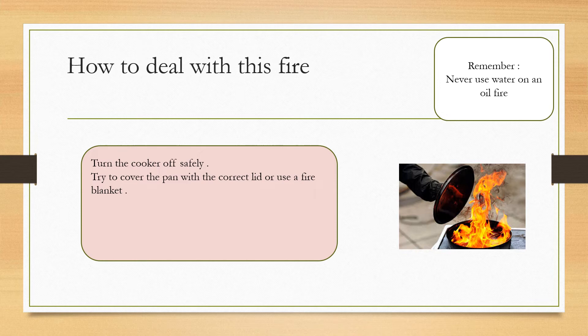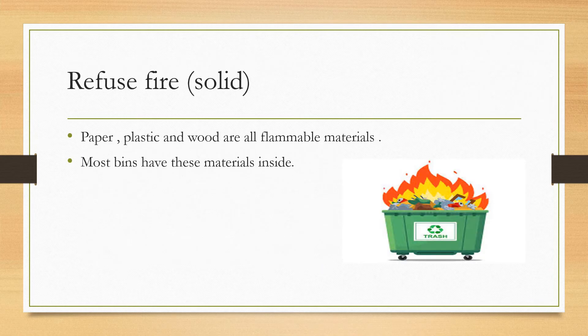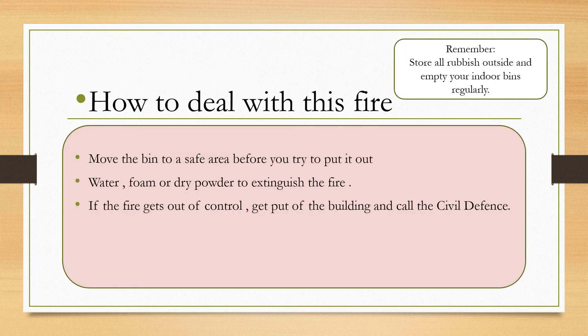If the fire gets out of control, get out of the building and call the civil defense immediately. The third type of fire is refuse fire. Refuse fire can be caused by rubbish, trash, or refuse — whatever you call it — it makes great fuel for a fire. Paper, plastic, and wood are all flammable materials, and most bins have these materials inside.